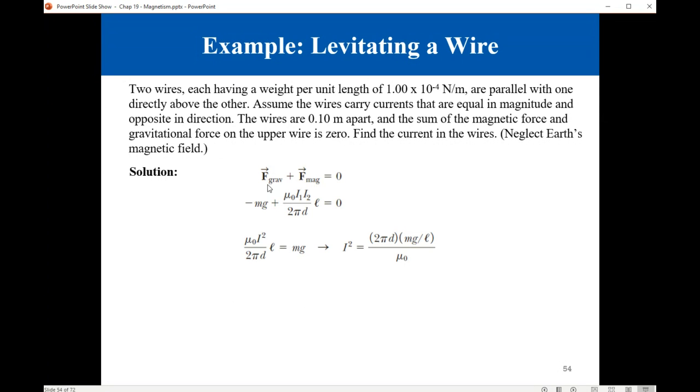So this is what we have: the total force is zero, with gravitational force downward and magnetic force upward. So -mg + μ₀I1I2L/(2πD) equals zero. Now we use this equation to solve for the current. Since the magnitude of the current in both wires is the same, I1I2 equals I². Solving for I², we get I² = 2πD(mg/L)/μ₀.